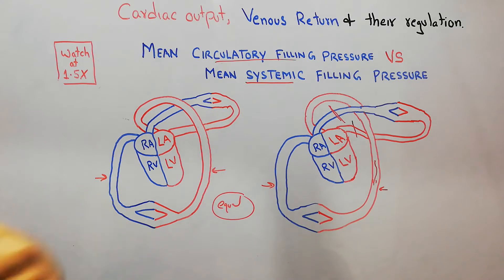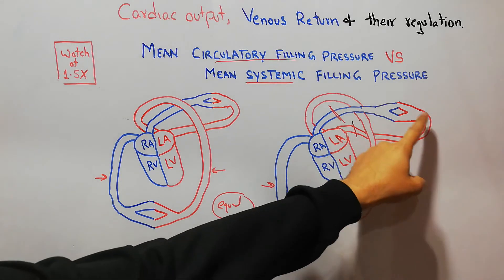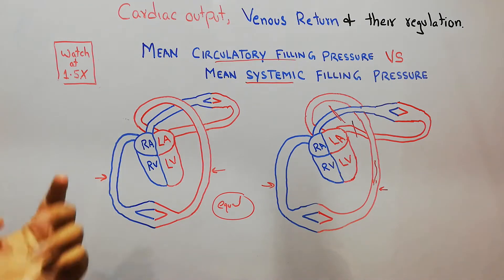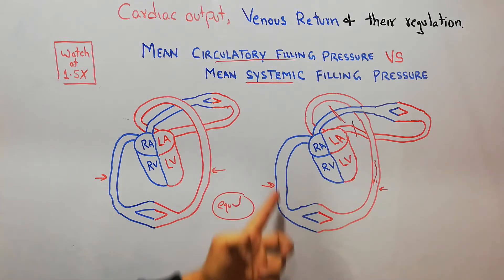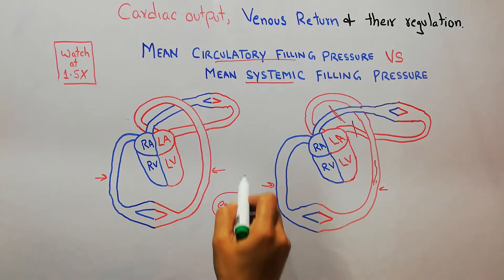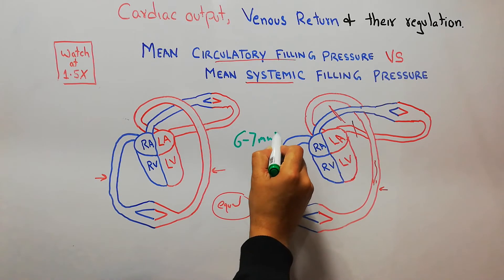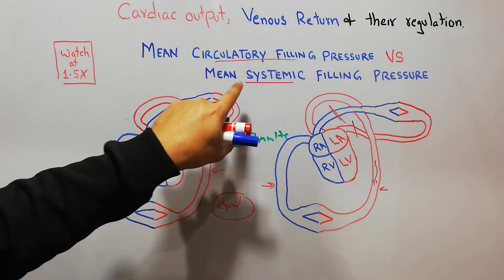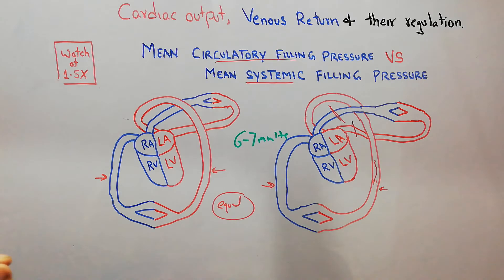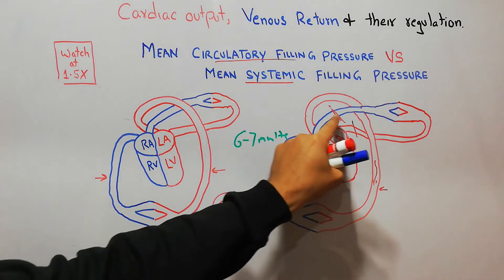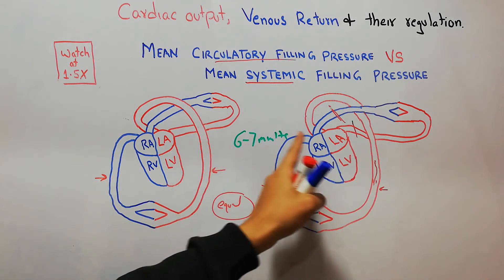Mean circulatory filling pressure can be measured at any point in systemic or pulmonary vessels, but mean systemic filling pressure must be measured in systemic vessels only, because flow to the lungs has been blocked. The normal value of both mean circulatory filling pressure and mean systemic filling pressure is around six to seven millimeters of mercury. Mean systemic is not much different from mean circulatory because the amount of blood going to the lungs is very small compared to the whole system.